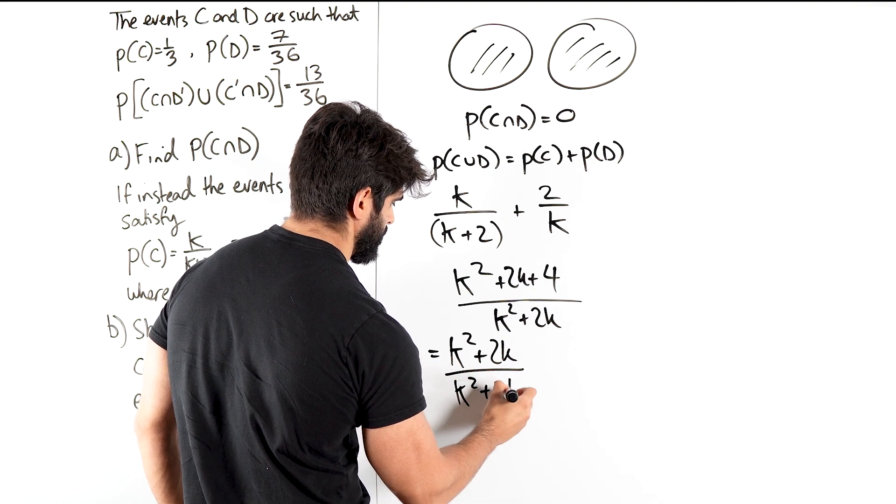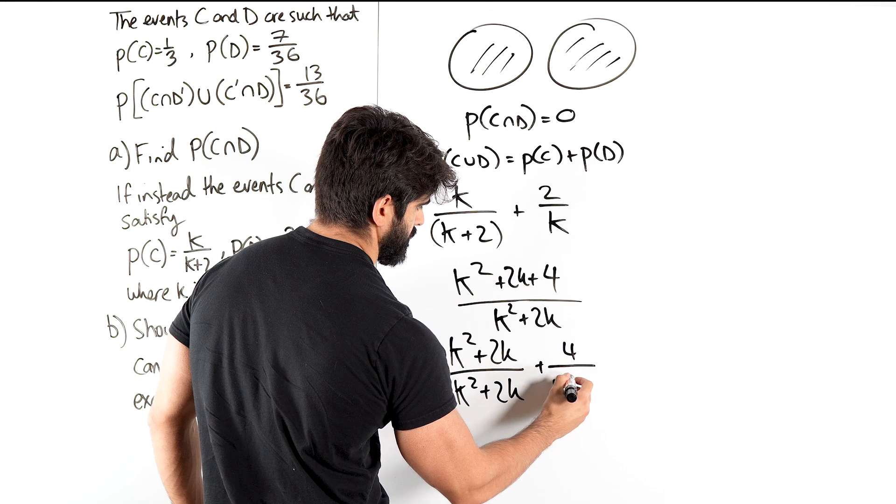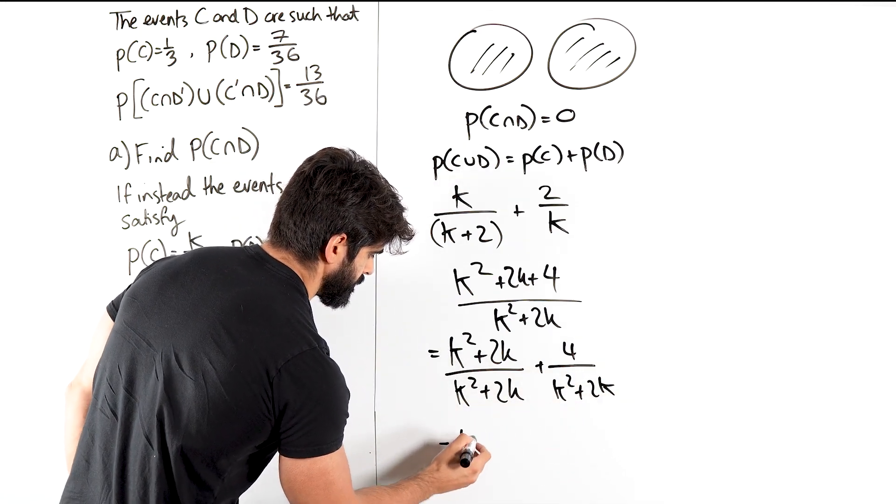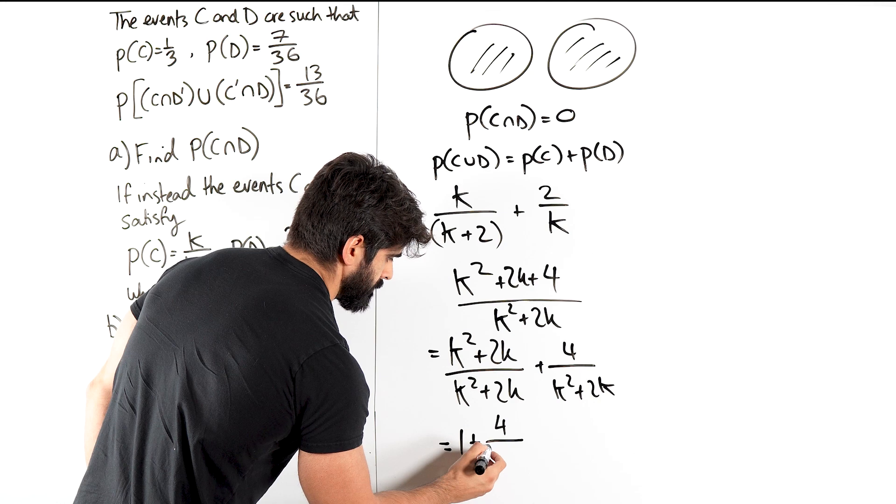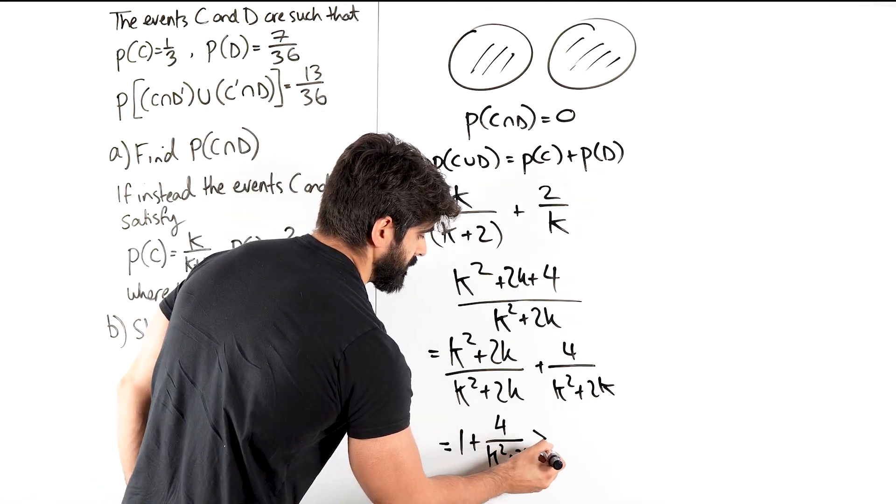So if we split the fraction, yeah, plus 4 over K squared plus 2K, we get 1 plus. And we specified that this K is positive, so this is bigger than 1.